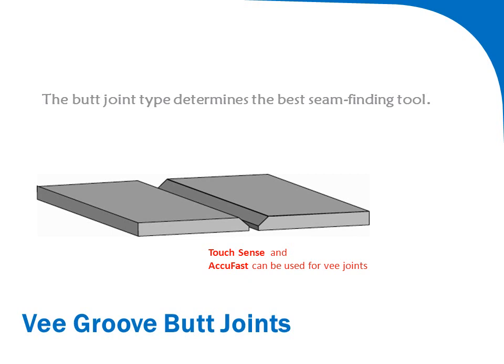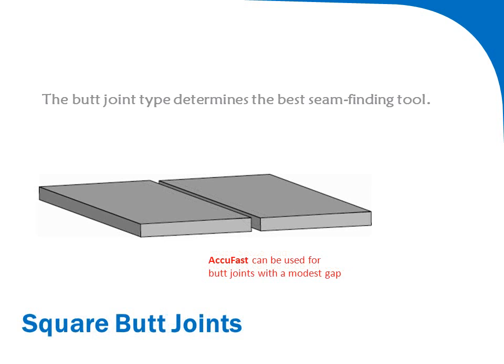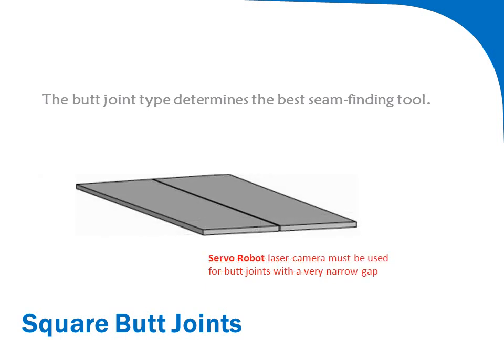V-groove butt joints can be detected using all three seam finding tools. Touch sensing requires more significant joint wall surface and is best used for thicker parts. AccuFast can be used for thinner parts and can also detect square butt joints with a modest gap. An edge detect macro routine provides gap width measurement.